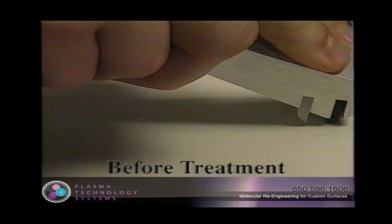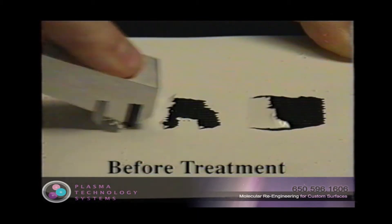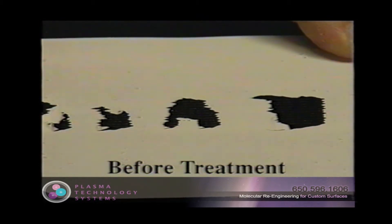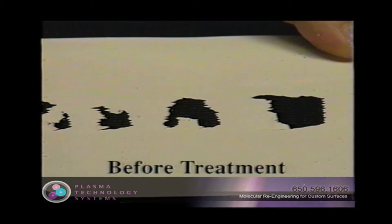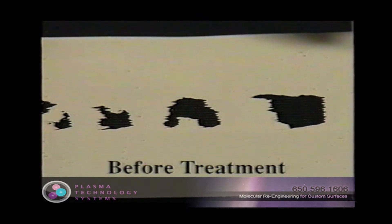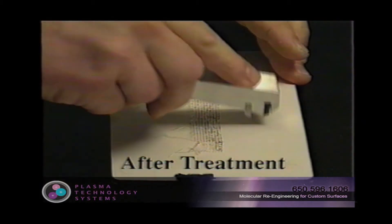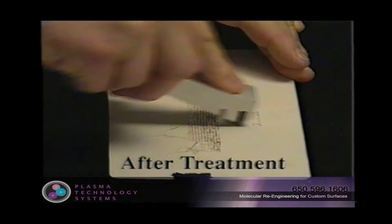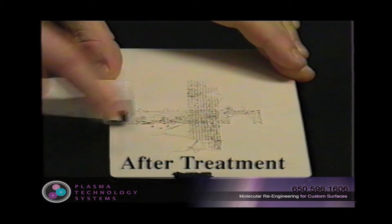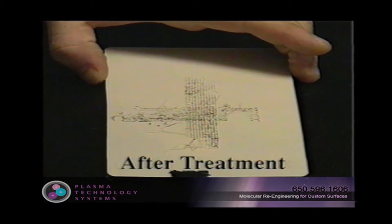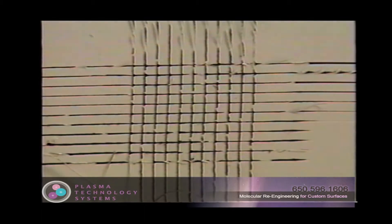A common application of plasma treatment is to prepare the polymer surface for improved paint or coating adhesion. The ASTM scratch test used to determine the quality of the adhesive bond graphically demonstrates the effectiveness of plasma processing.